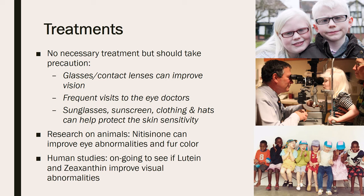Recent studies on animals have shown that nitisinone can improve eye abnormalities and fur color in these animals; however, it has not been tested on humans yet. For the human studies, they are currently ongoing to see if lutein and zeaxanthin improve visual abnormalities for people with albinism. Although there are some ongoing studies to find a treatment, right now the best thing for affected people to do is take precautions using these techniques.